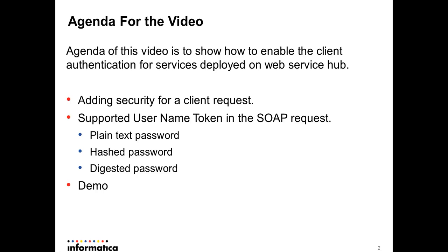We are talking about what configuration is required to enable the workflows deployed on Web Service Hub for client authentication. There are three types of username token supported with PowerCenter. The first is plain text password, provided as clear text in the SOAP request. The second type is hashed password, where you hide the clear text password using a hash function — either MD5 or SHA1.